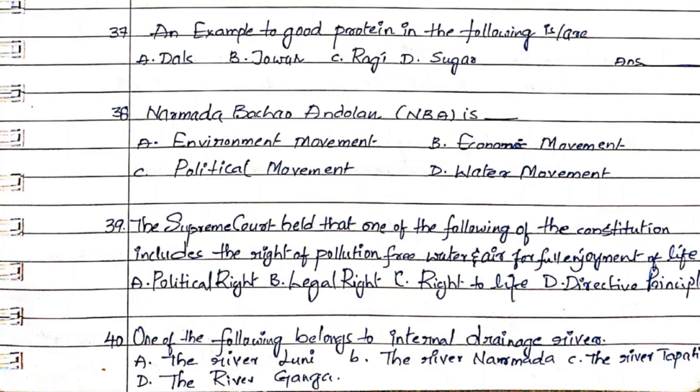Question 39: The Supreme Court held that one of the following of the Constitution includes the right of pollution-free water and air for full enjoyment of life. Option A. Political right, Option B. Legal right, Option C. Right to life, Option D. Directive principle. The answer is Option C. Right to life.